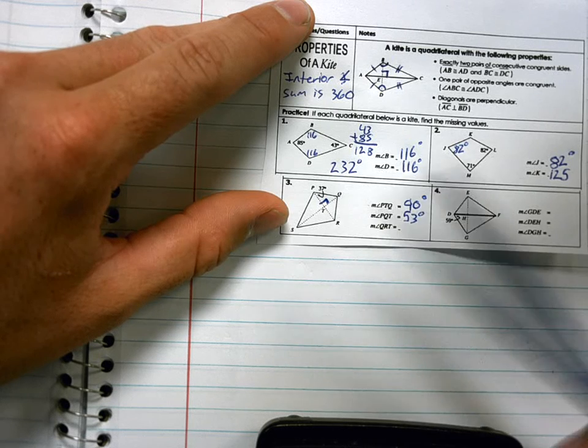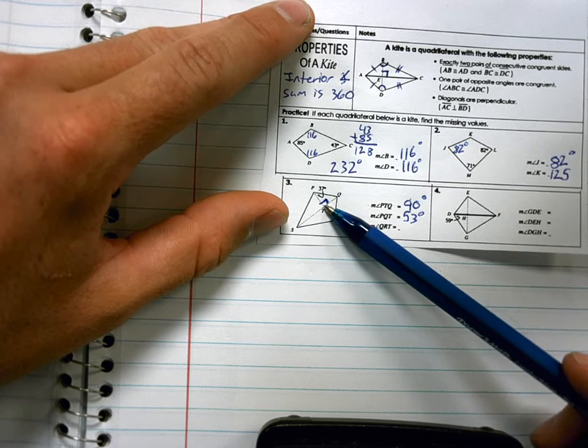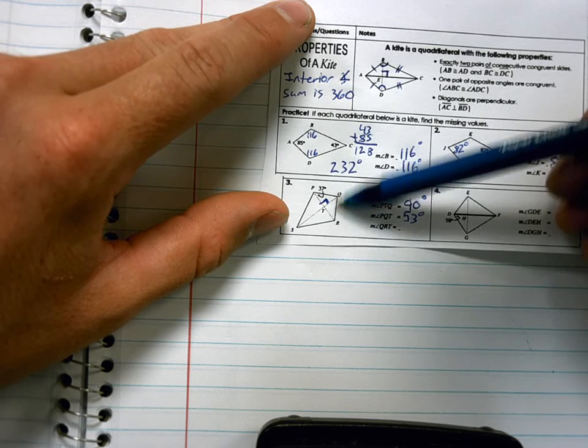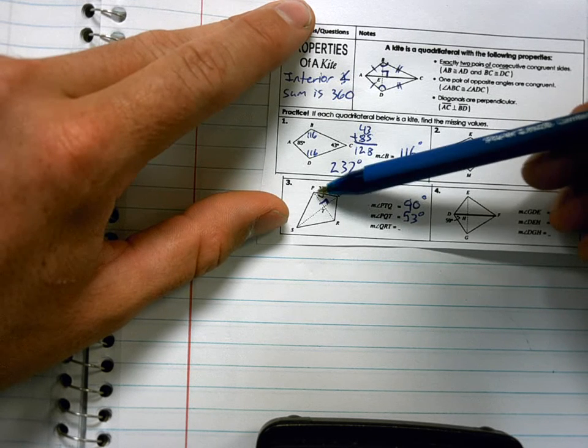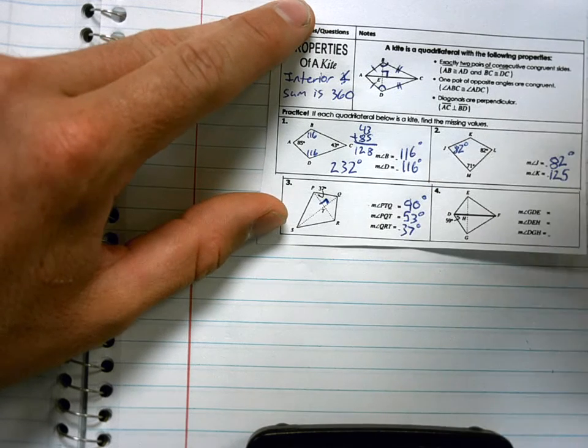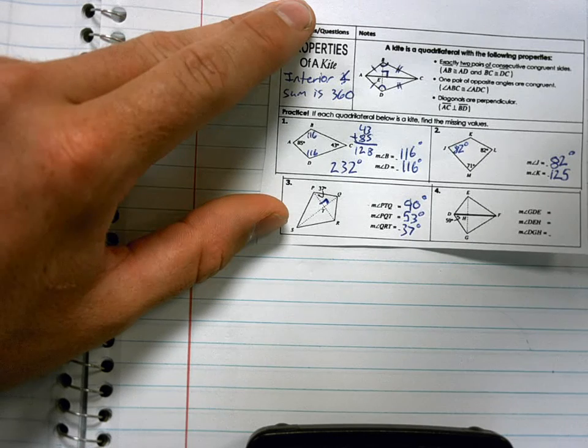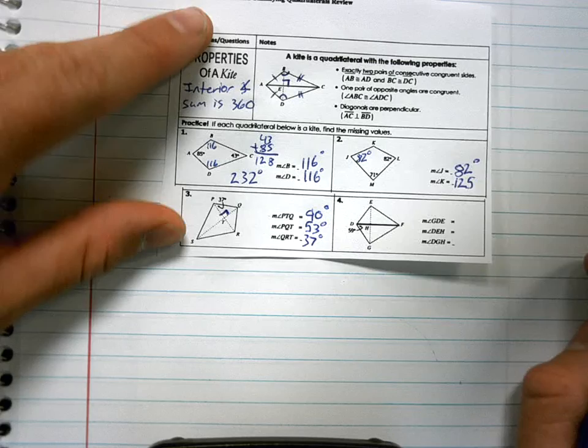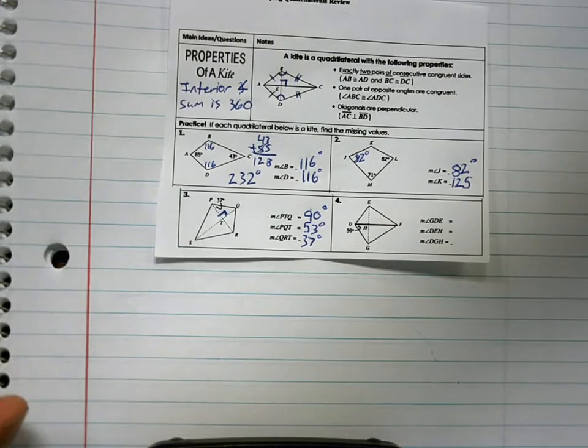And I need QRT. Well, QRT needs to be the same as the other side. So it's also 37 degrees. Okay.